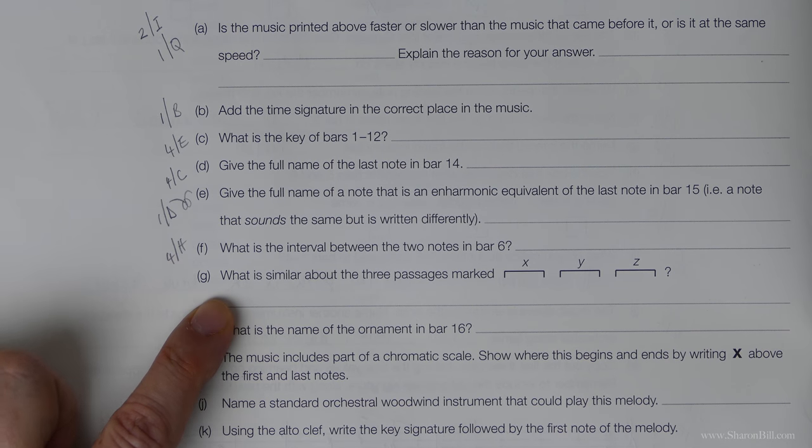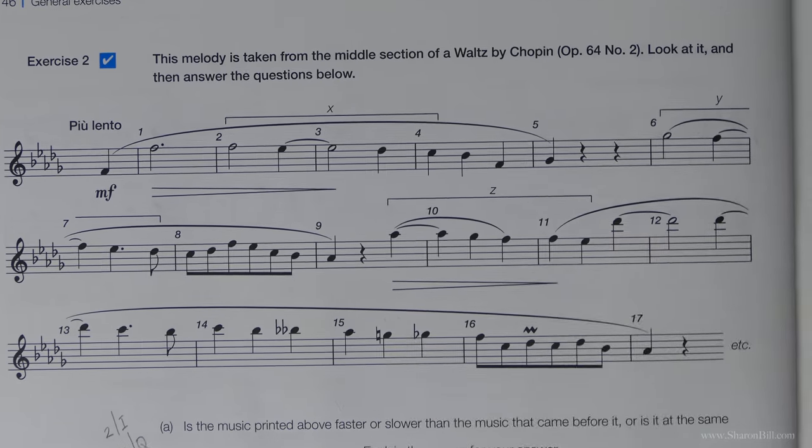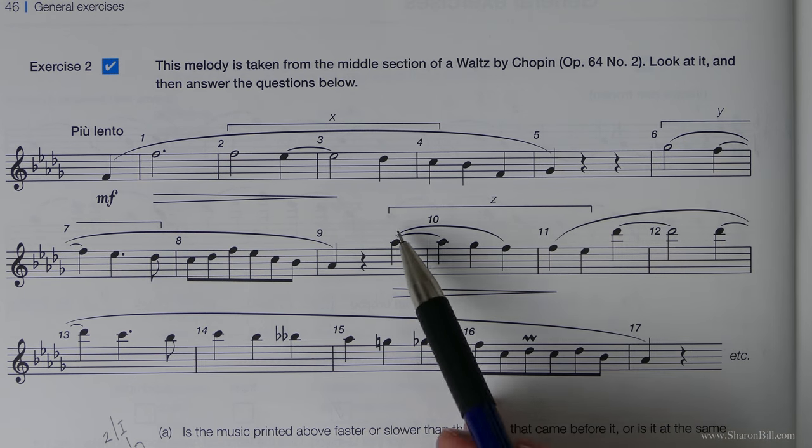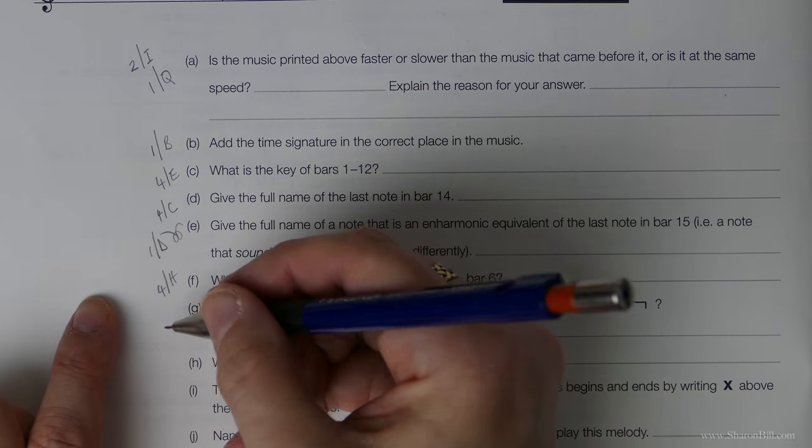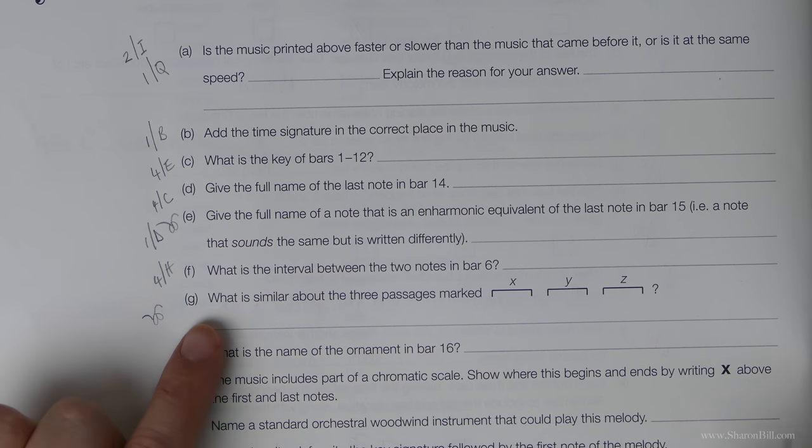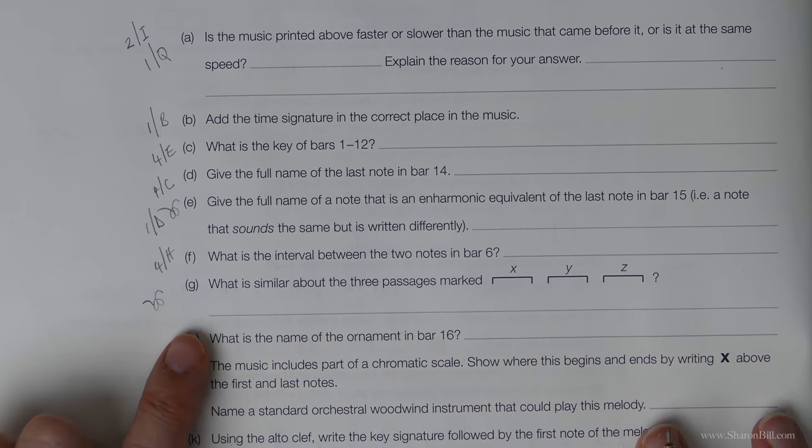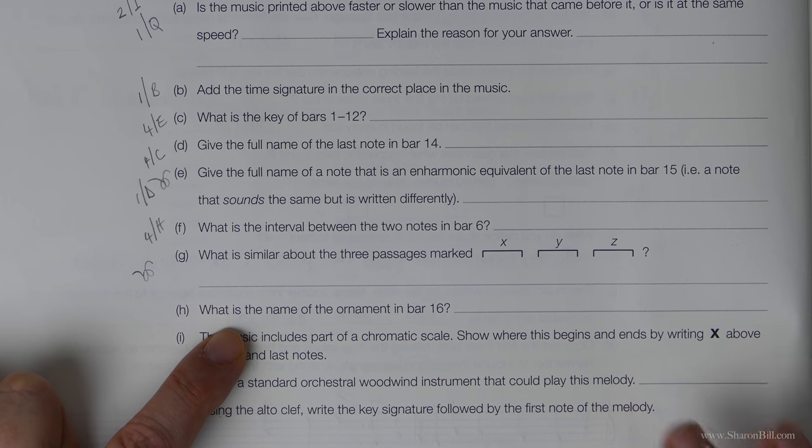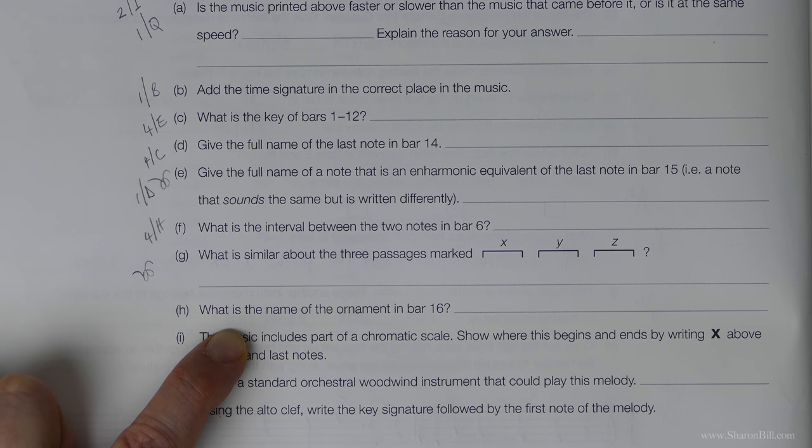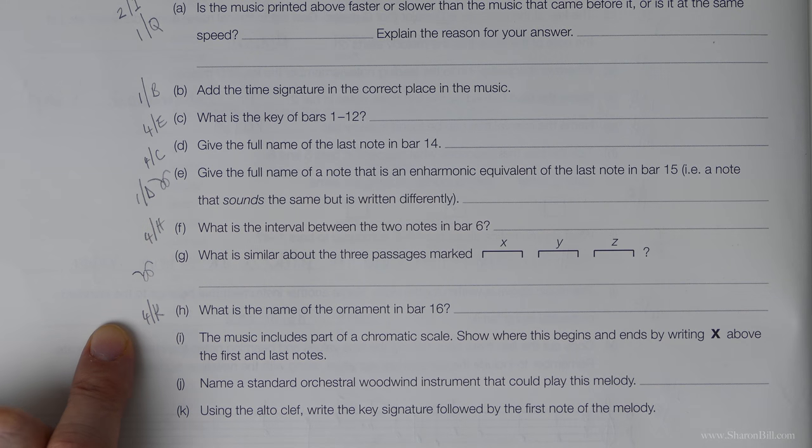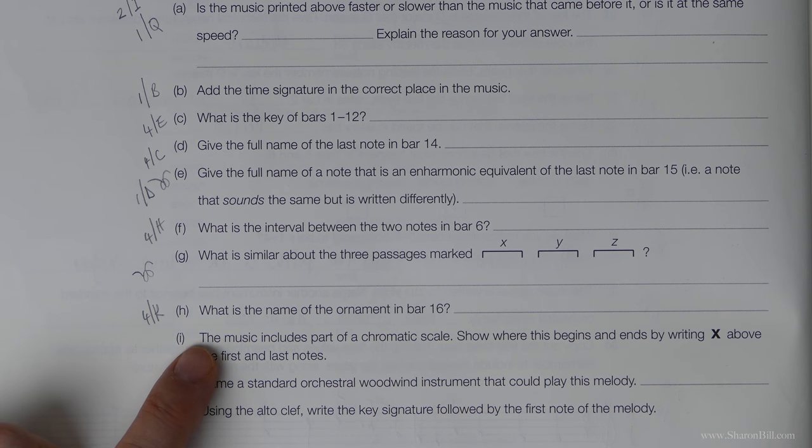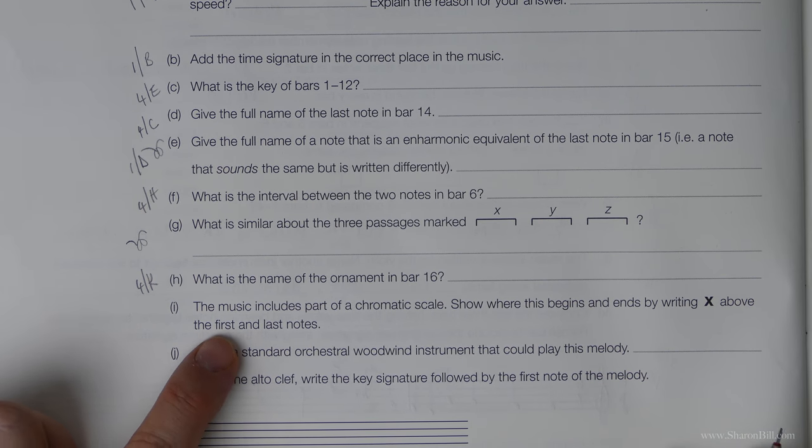What's similar about the three passages marked with these brackets here? So we're just doing a bit of comparison to these bracketed areas here. So really it's just general observation. Don't get too bogged down in the detail. It's just a general observation there. What's the name of the ornament in bar 16? So we deal with ornaments in this grade. So that's grade four, section K. And if you find that you've got a bit rusty on any of these topics, you can always just pop back to the video and refresh your memory on the related tutorials there.